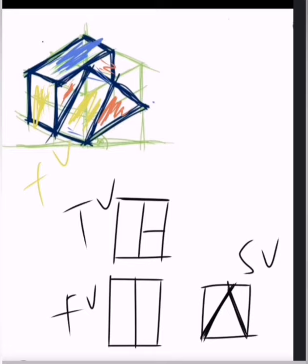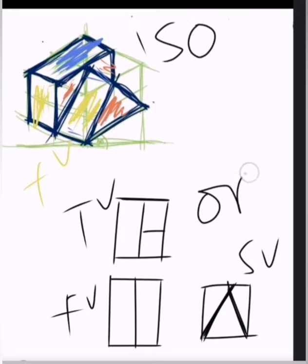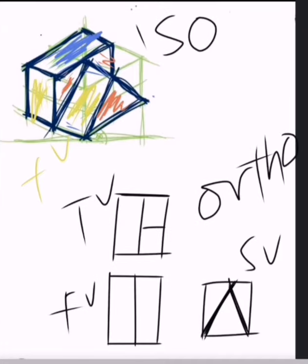Now we have the orthographic projection of that object which was in the isometric projection — this is the isometric projection transformed into an orthographic projection. This is not a precise drawing because it would have hidden lines and required measurements, but this is the basics and this is how it will look like. We have the front view, the top view, and the side view of a three-dimensional object.